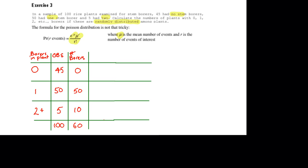Here I've started to work out the results. I've listed a column where I've got the number of borers in the plant: 0, 1, or 2. The observed number of plants with that is 45, 50, and 5, for 100 plants in total.